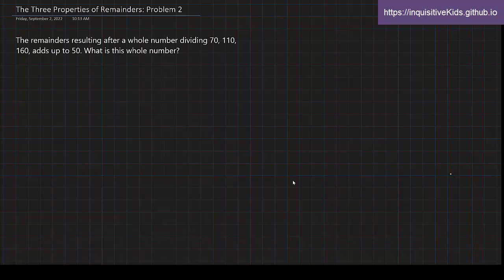Problem two. The remainders resulting after a whole number dividing 70, 110, 160 adds up to 50. What is this whole number?